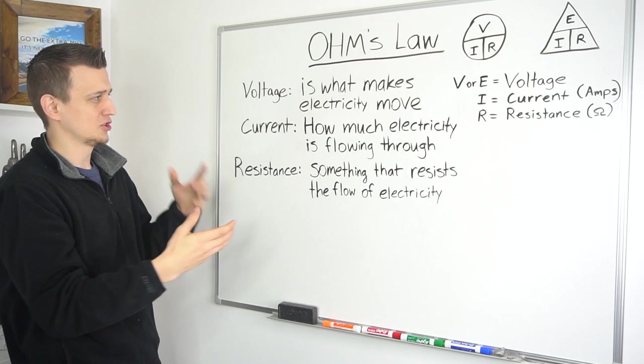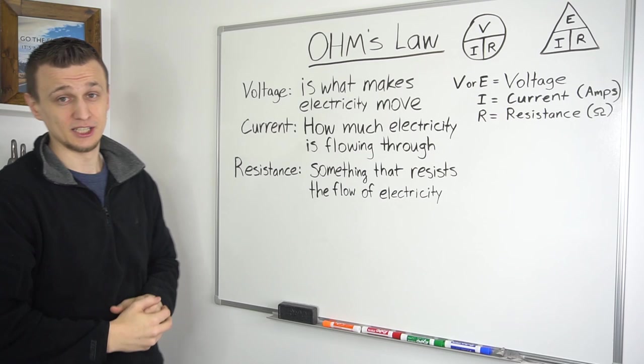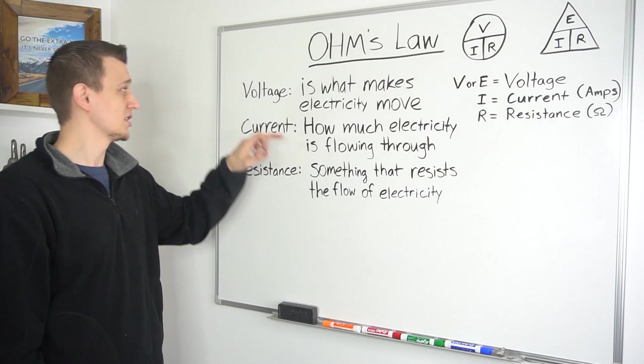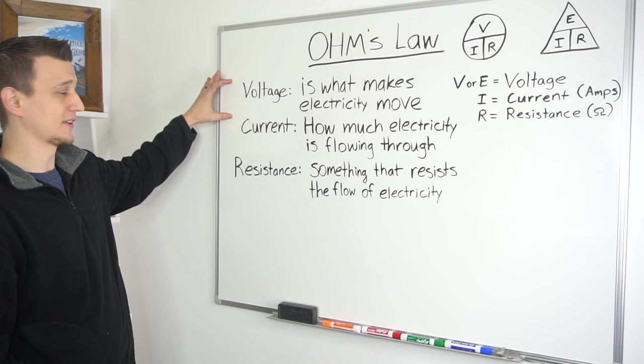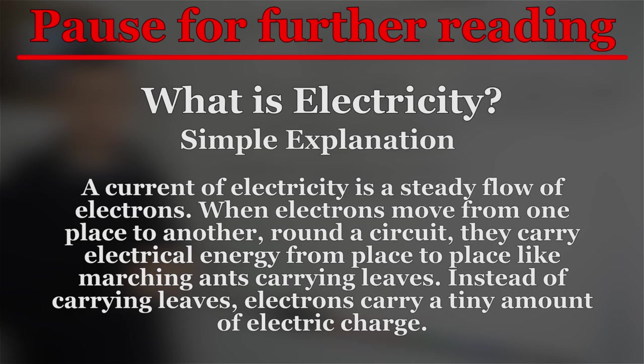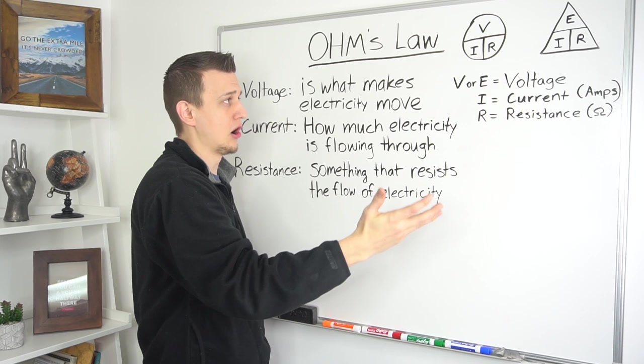And before I go into examples of how I would use this formula, just really briefly, I want to go over what voltage, current, and resistance actually is, just in simple terms. So voltage is what makes electricity move. It's basically the driving force, the stuff that pushes electricity through. Some people refer to it as pressure or tension.